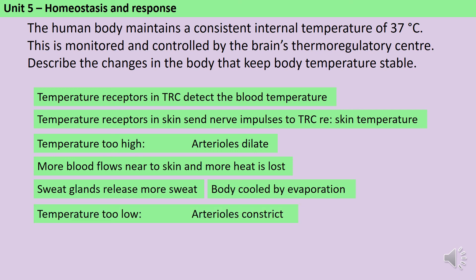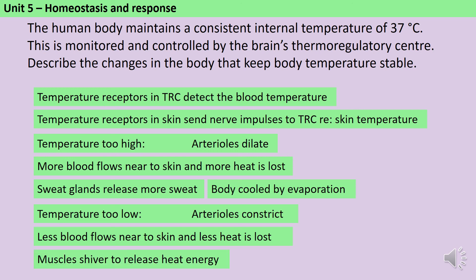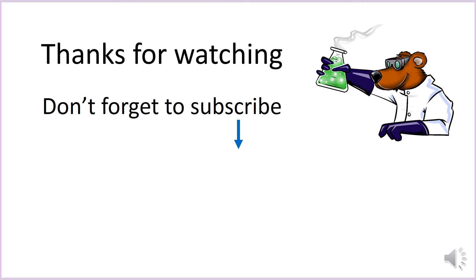If the temperature becomes too low then the arterioles constrict in what we call vasoconstriction, so less blood flows near to the skin and less heat is lost. Finally, muscles shiver to release heat energy and they do this by respiring more. Thank you very much for watching and I hope you found that a useful introduction to the regulation of body temperature.